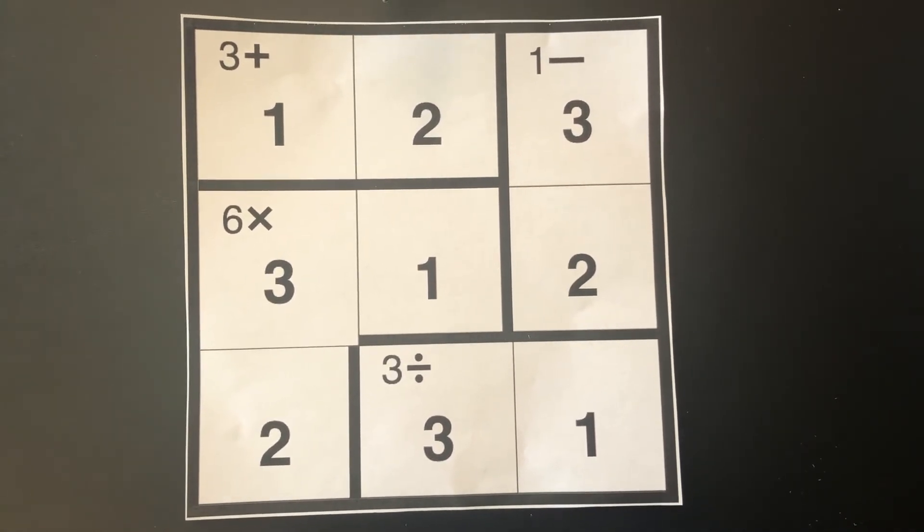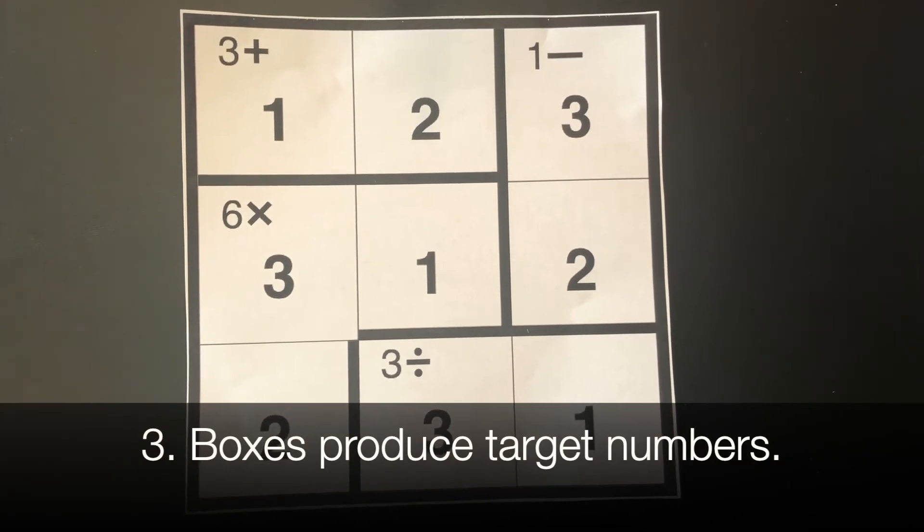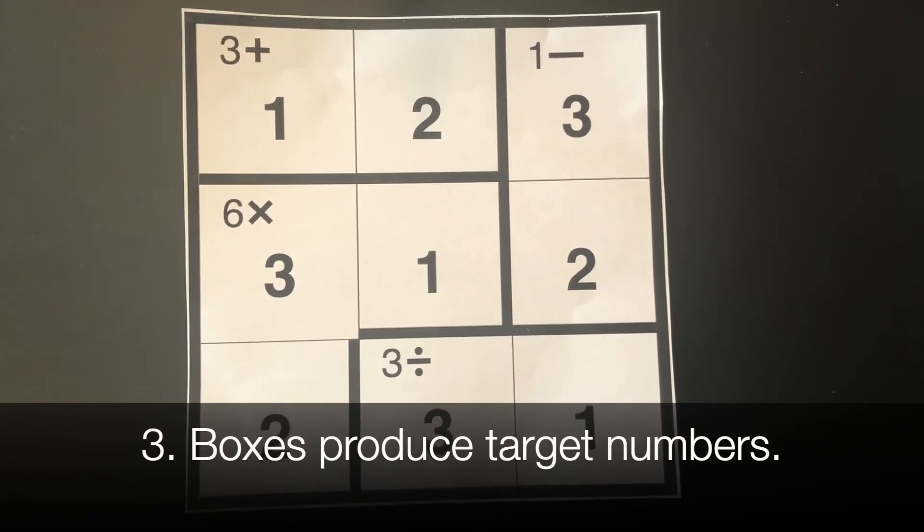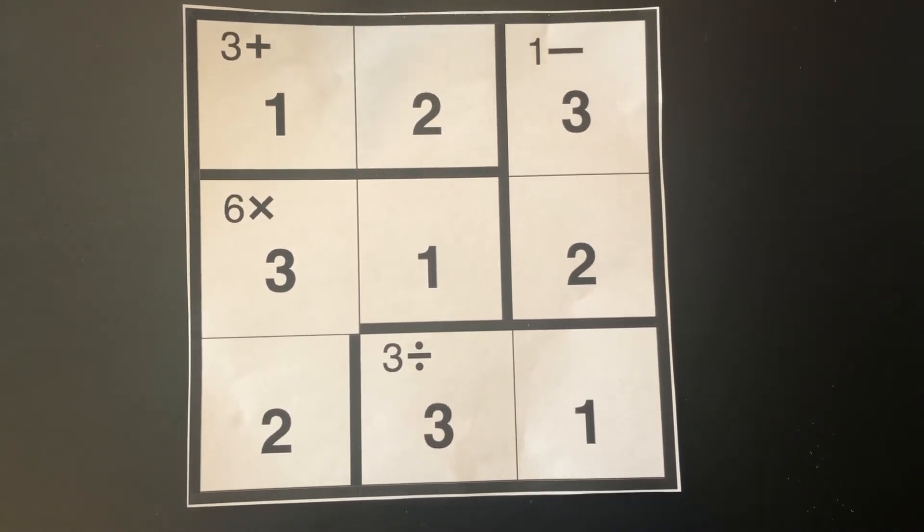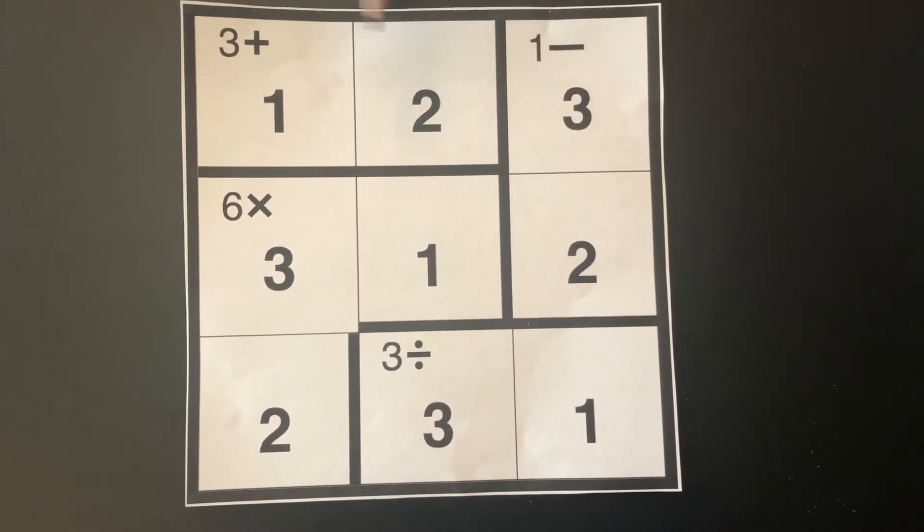Number three, the numbers in each cage combine to produce the target number. For example, in a three plus cage, the two numbers add to equal three.